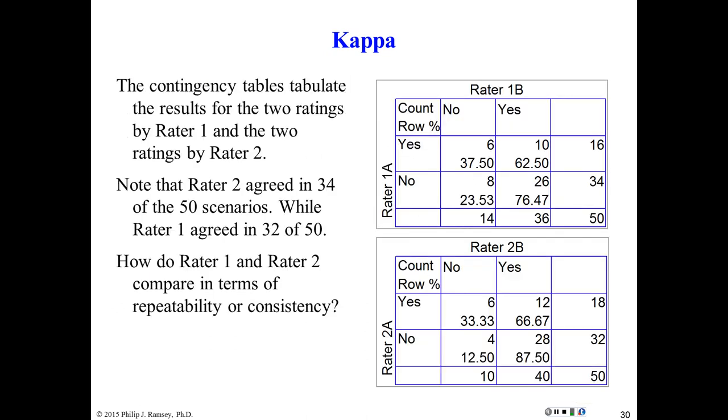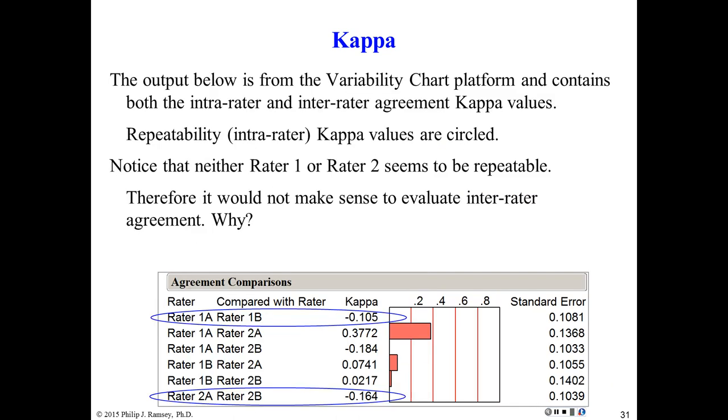We can look at the contingency table. By the way, JMP will supply you with the expected counts. Go to the variability chart platform and notice the intra-rater agreement. There's rater one. How well did he or she agree? And rater two. So we do all possible combinations. We really don't have any way out of it. There's no simple mathematical way to separate the two components. But you can see that neither rater seems to have much ability to agree.